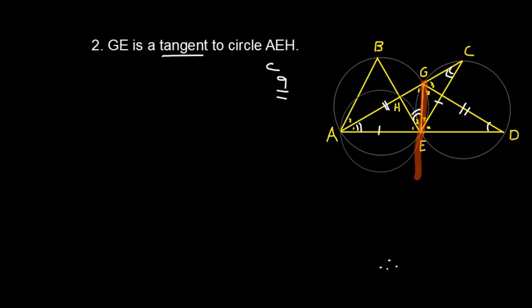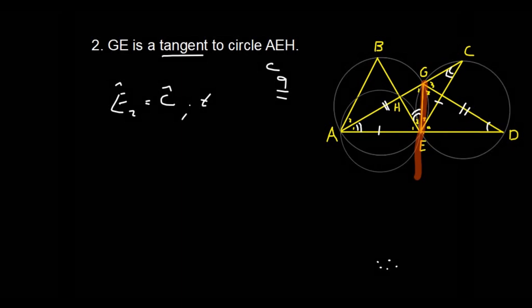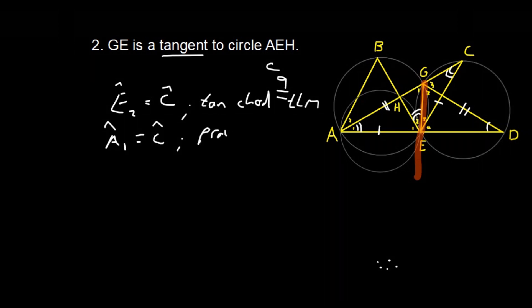Okay. So, let's write it down. So, we would write here that angle E2 was equal to angle C. And that would be tangent chord theorem. And then we could go and repeat the thing and say, well, we know angle A1 is equal to C, because, well, that was proven already. And when you see the C and the C, fantastic. We can say angle E2 is equal to angle A1.